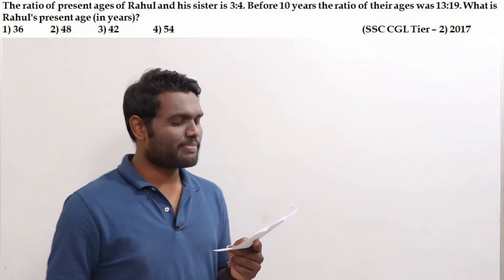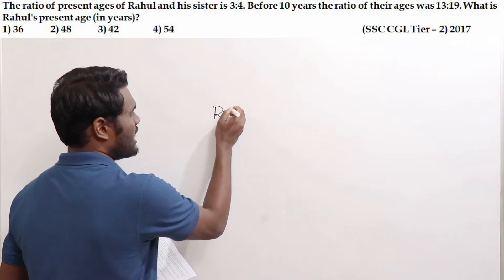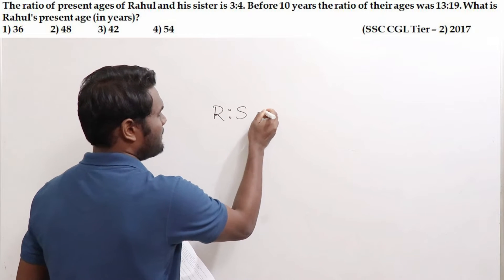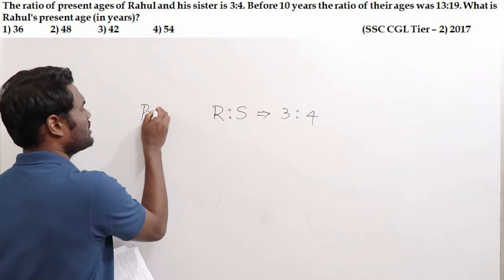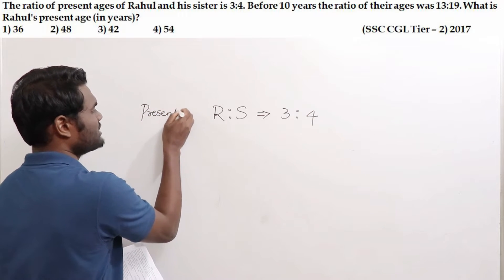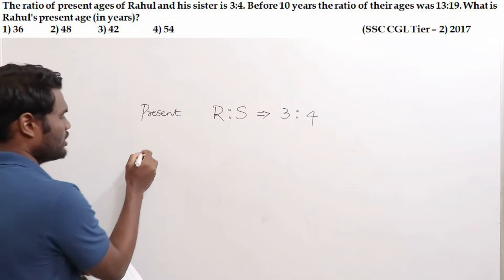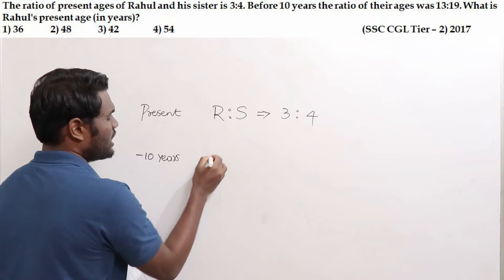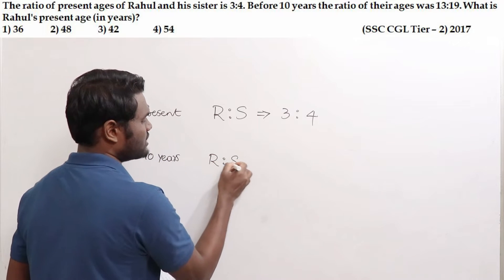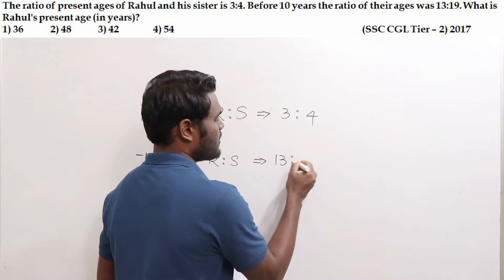Let us look at the next question. The ratio of present ages of Rahul and his sister is 3:4. So the present ages ratio of Rahul and his sister is 3:4. Next, 10 years ago, the ratio of Rahul and his sister was 13:19.